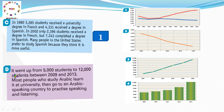Paragraph D: It went up from 5,000 students to 12,000 students between 2009 and 2013. طبعا هنا يحكي عن المتعلمين اللغة العربية. Most people who study Arabic learn it at university, then go to an Arabic speaking country to practice speaking and listening. في عام 2009 العدد كان بين 4,000 و 6,000 يعني 5,000. وصعد بشكل كبير في عام 2013 وصلوا إلى 12,000. إذن paragraph D is for graph 4.